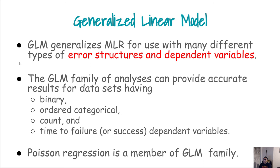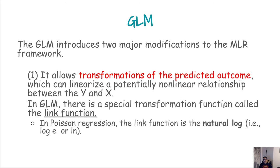Remember when we talked about logistic regression — it is basically a generalized version of regression where the error structure and the dependent variable are different. We can extend this further: logistic regression works with only binary variables, but we can extend it to ordinal categorical variables, count variables, time-to-failure variables, and more. These fall under a bigger umbrella we call the Generalized Linear Model (GLM). Poisson regression is one member of this GLM family.